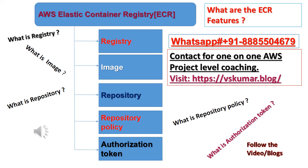5. The cross-region and cross-account replication makes it easier for you to have your images where you need them. 6. This is configured as a registry setting and is on a per-region basis. For more information, see Private Registry Settings.